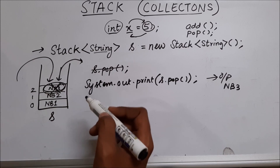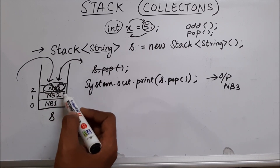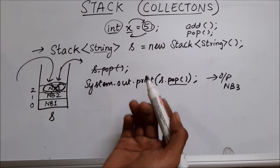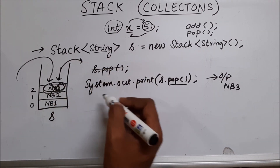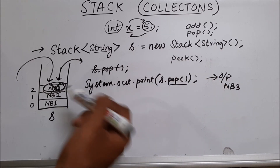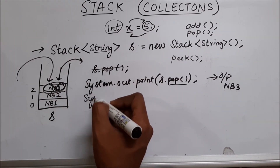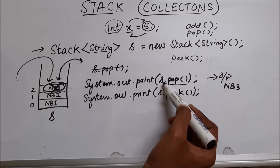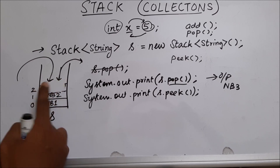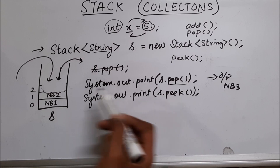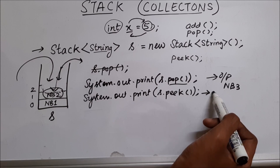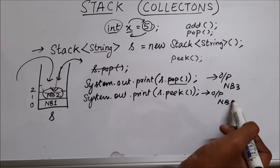So now NB three is not present. Now let's say you just want to see the topmost element and not remove it from the stack. Pop is going to remove it, but what if you just want to see what is present on top of the stack? For that we have a method called peek. Peek is going to peek inside the stack and give us the topmost element. Since we used pop earlier, NB three is gone. When we use the peek method, it will see that NB two is present and give you an output of the string NB two.